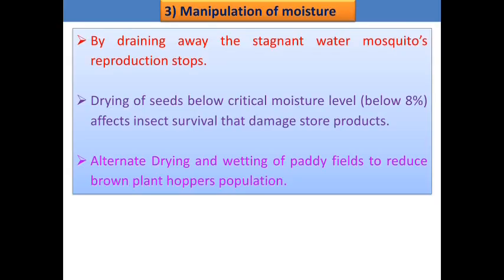The next technique is manipulation of moisture. Drying seeds below the critical moisture level of below 8 percent affects insect survival and reduces damage to stored products. After harvesting different cereal products, pulses, or oilseeds, sun drying and maintaining moisture below 8 percent helps reduce the stored grain pest population. Alternate drying and wetting of paddy fields also helps reduce the brown plant hopper population.